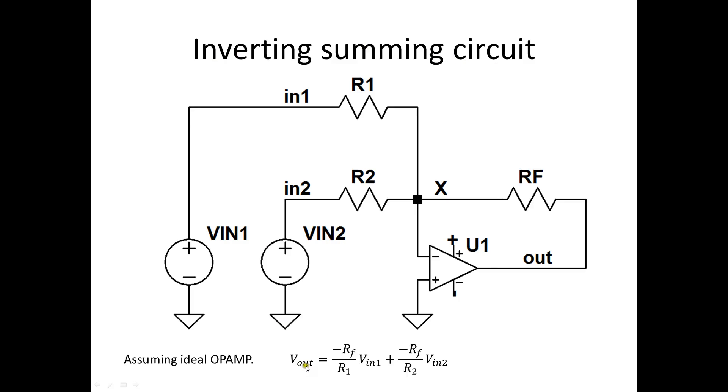And the response is Vout equals minus Rf divided by R1 times Vin1 plus minus Rf divided by R2 times Vin2. Now you can have more inputs than just these two, and the way we'll solve it can be applied to the general case of n inputs.